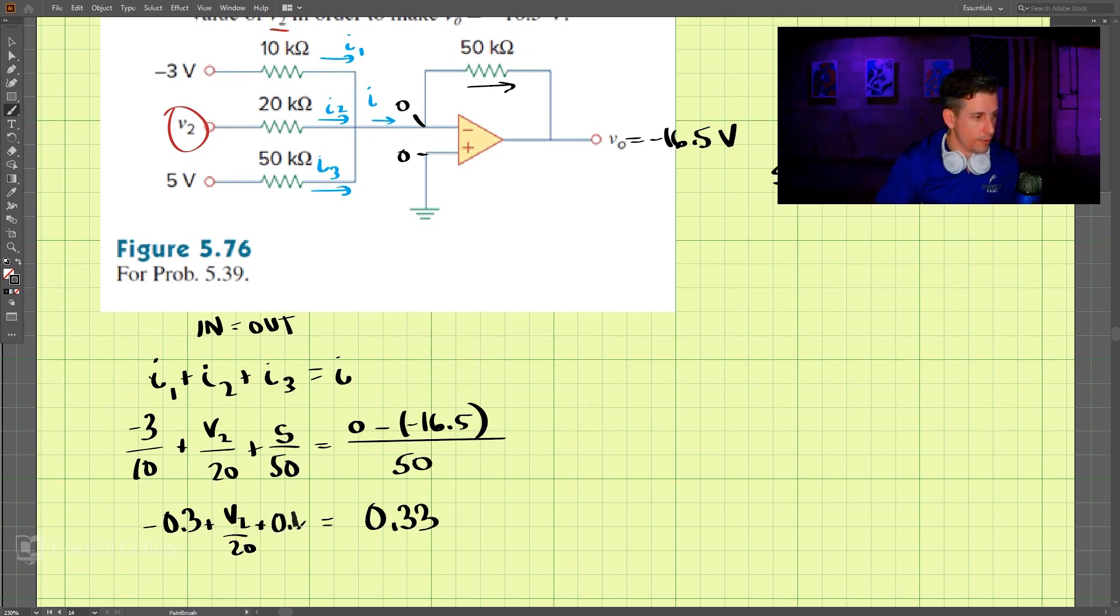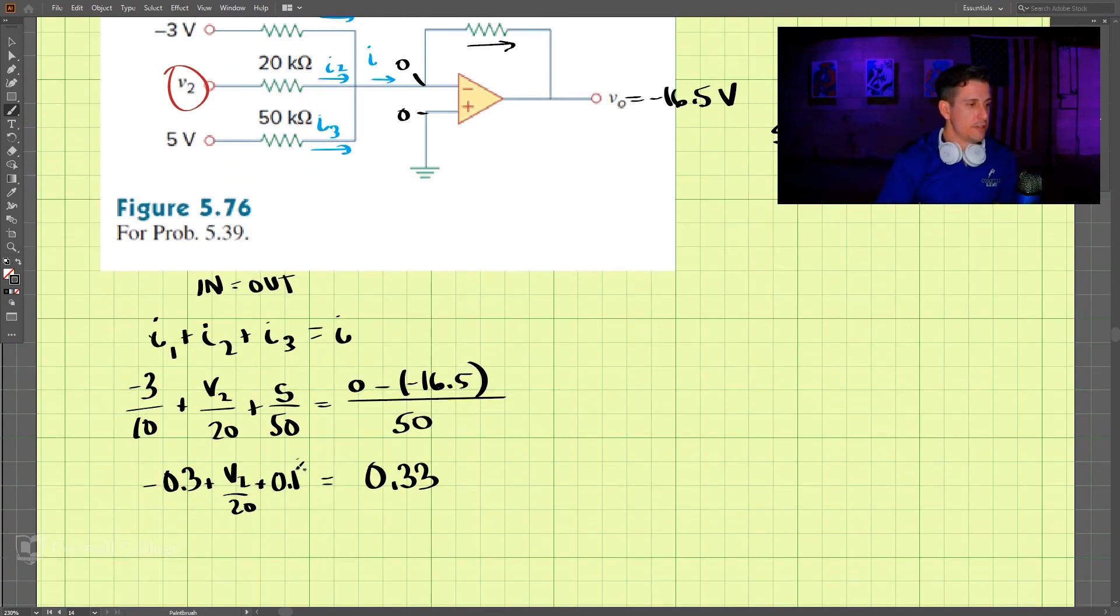So we have 0.33. V2 divided by 20 is equal to 0.53, which then means V2 is equal to 10.6 volts.